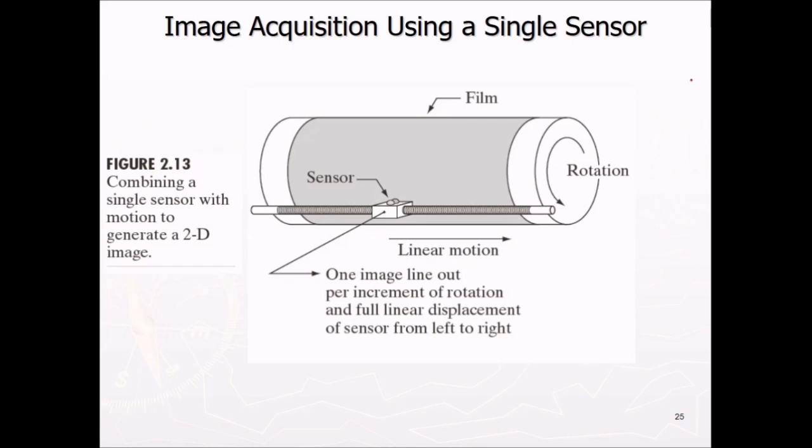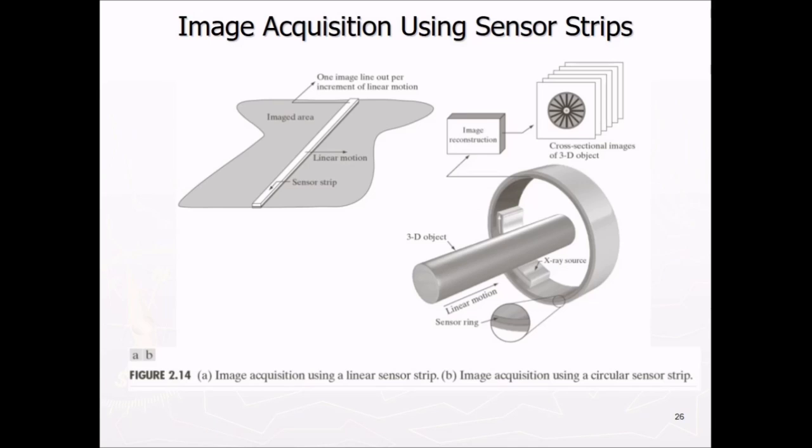This is image acquisition using a single sensor, combining a single sensor with a motion to generate a 2D image. So one line, image line out per increment of rotation and full linear displacement of sensor from left to right. So like this, then this, then this. From one side to another, it takes images, then again it goes back.